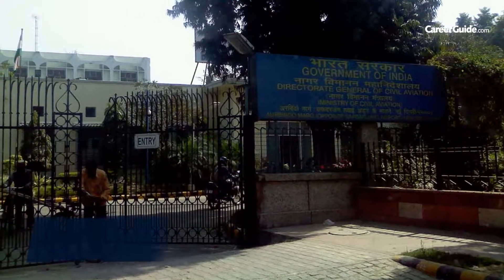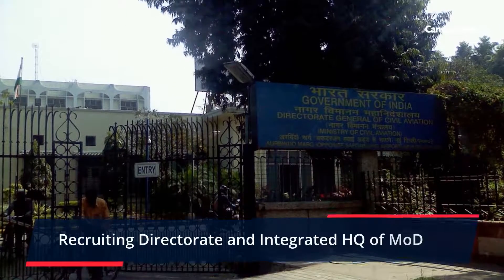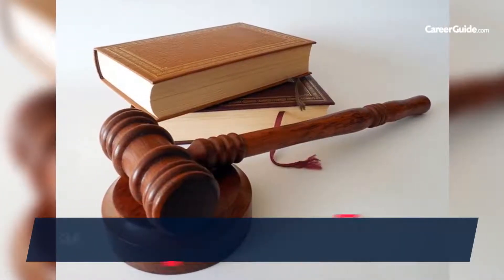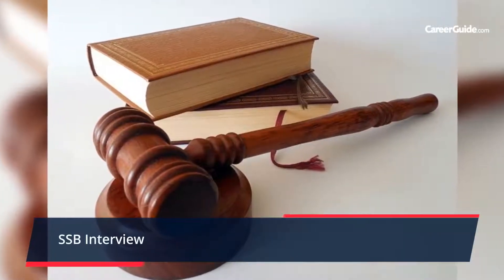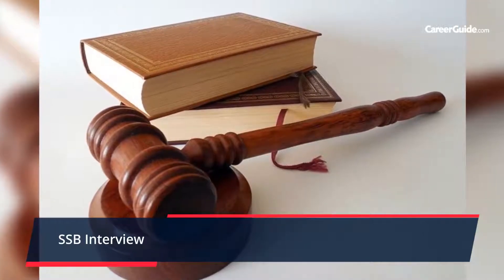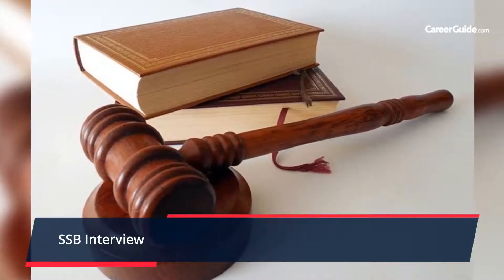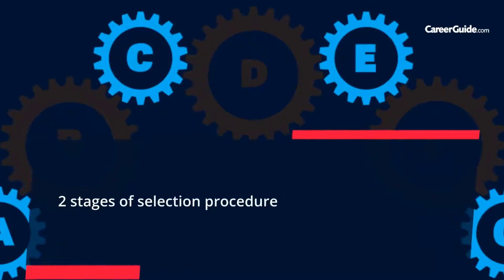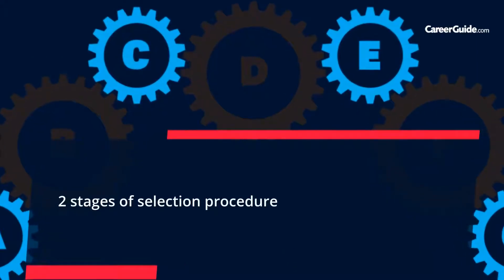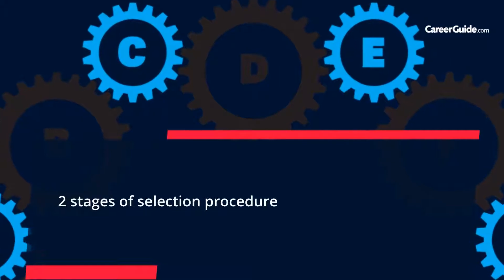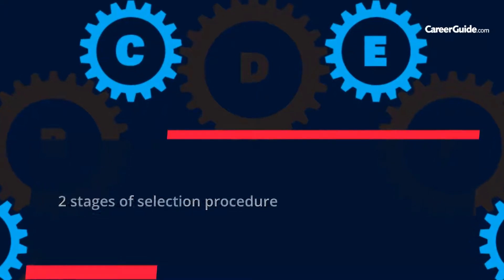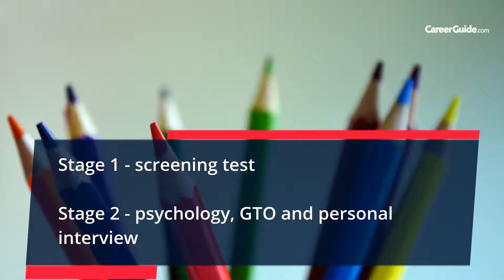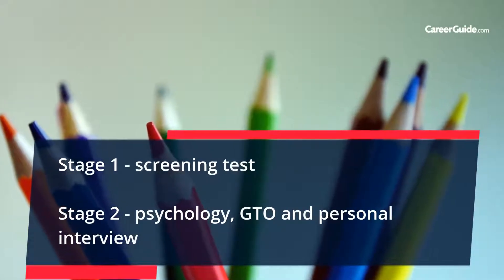Method of Selection for JAG Entry: Shortlisted candidates will face the SSP interview directly at allotted selection centers on specific dates. There will be two stages of selection procedure based on psychological aptitude test, held at selection centers. All shortlisted candidates will face the Stage 1 screening test on the first day of reporting.